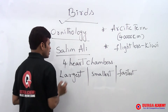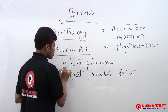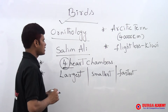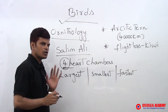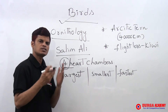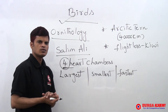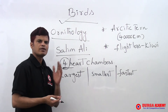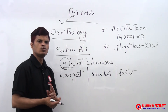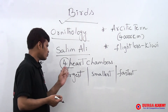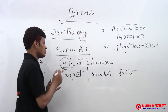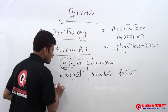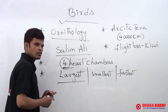Birds have four heart chambers. How many heart chambers are present in birds? Four. Human beings also have four. Snakes have three, amphibians have three, and fishes have two. So birds and human beings both have four heart chambers.